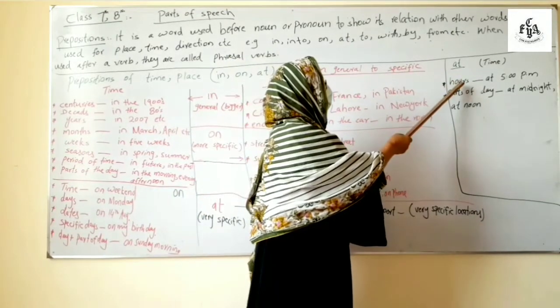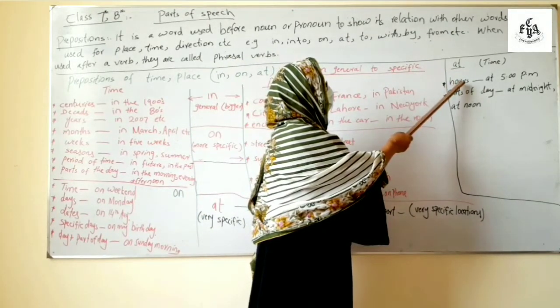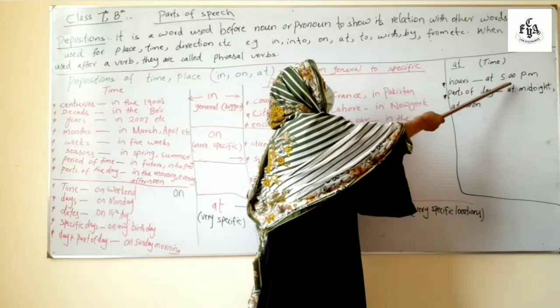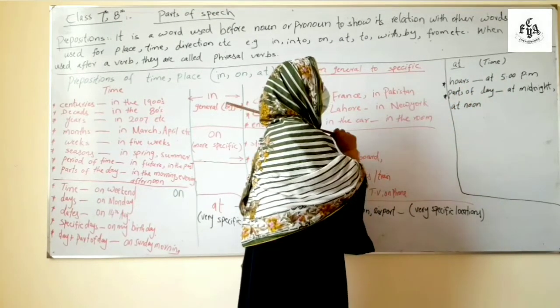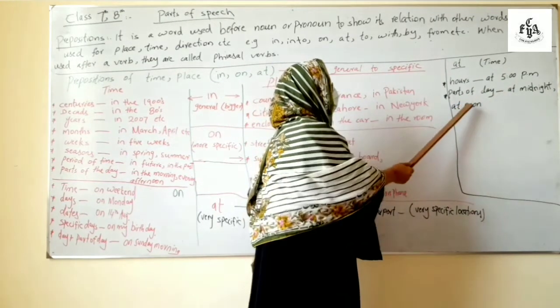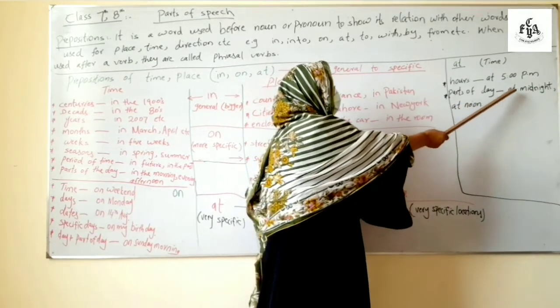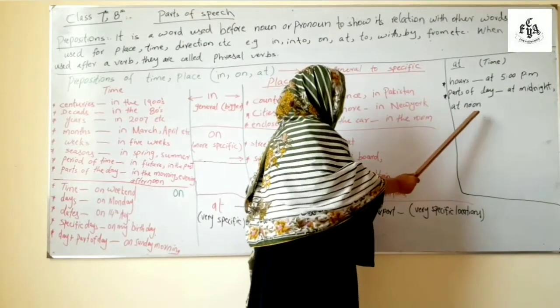And how it used for time. At for very specific like before the name of hours, for example at 5 pm. Parts of day, as three were taking in, but midnight and noon take at. At midnight, at noon.